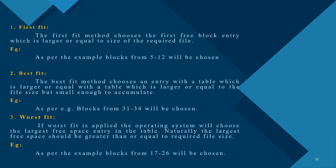For first fit, the first free block is chosen — as per our example, block 5 to 12 will be chosen. For best fit, the partition nearest or equal to the file size is chosen — this is the better method and is applied to the operating system. For worst fit, we choose the largest free space to store small data, which wastes space. As per our example, block from 17 to 26 will be chosen.